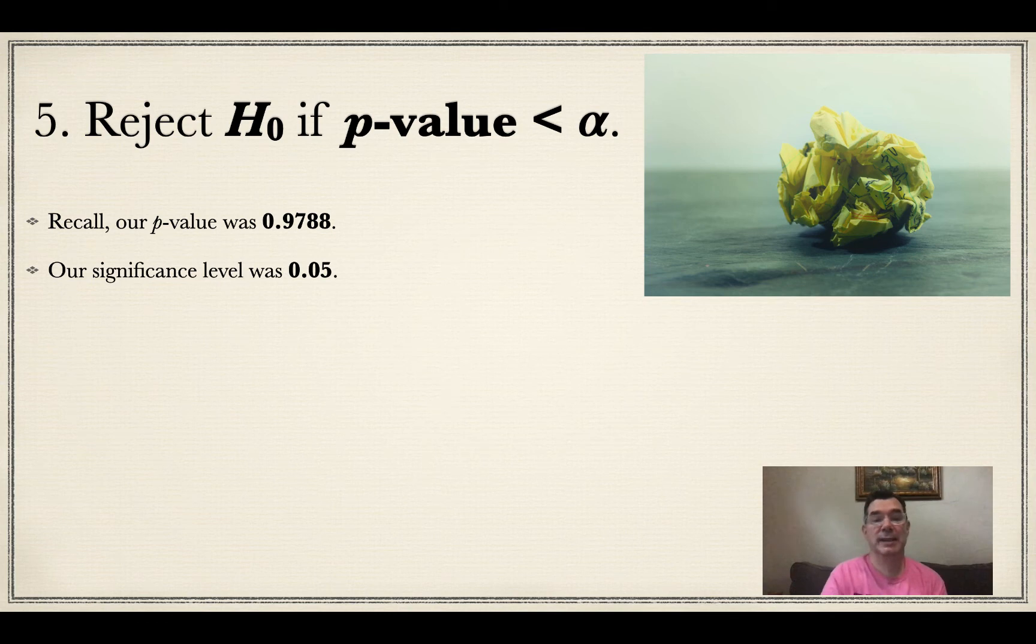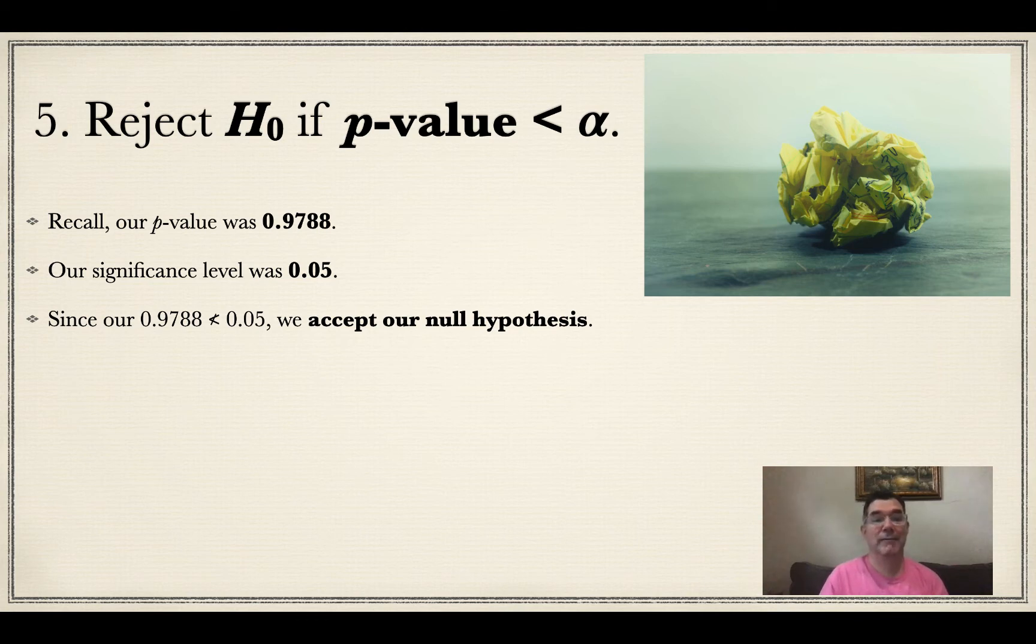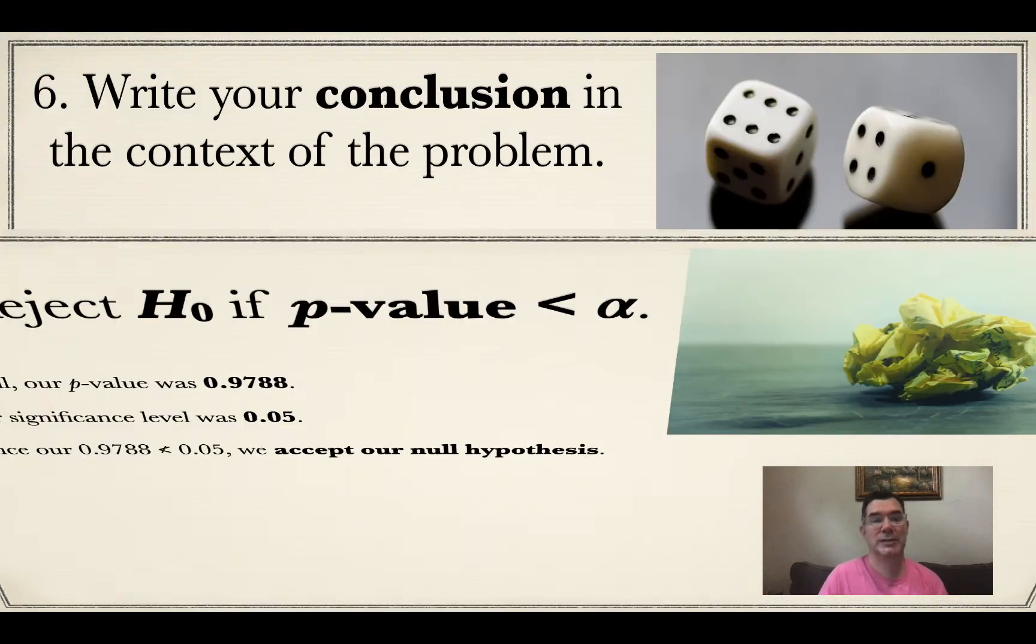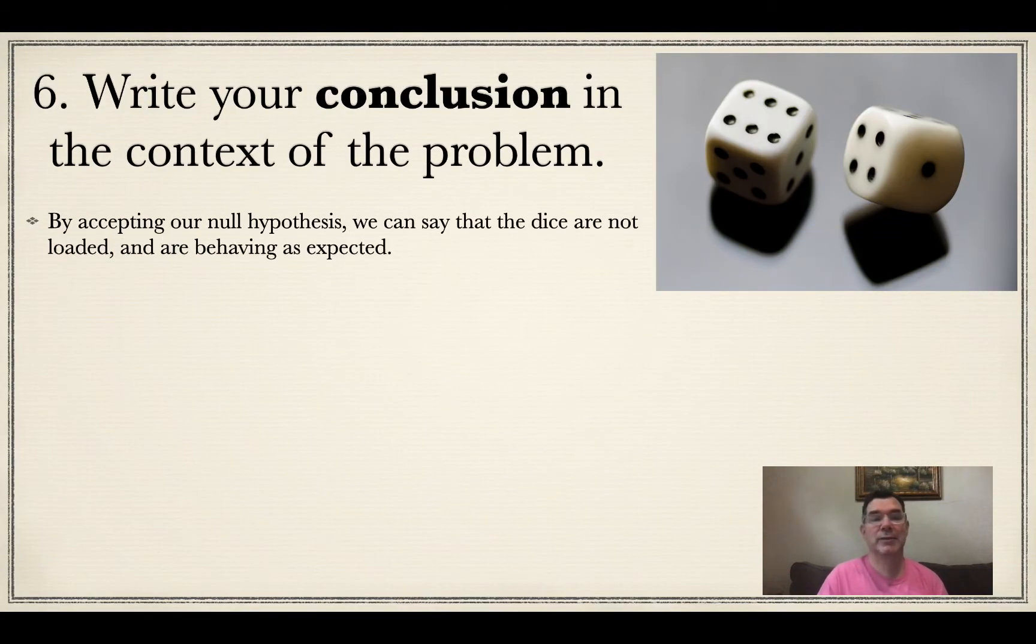Our significance level was 0.05. Now, the p-value for the first time in all of these videos, it is not less than 0.05. So I am going to accept my null hypothesis. What does that mean in the context of the problem? That means that the dice are not loaded and they are behaving as expected. So even though there were some variances between what I observed and what I expected, these dice can be considered fair dice and not loaded dice.